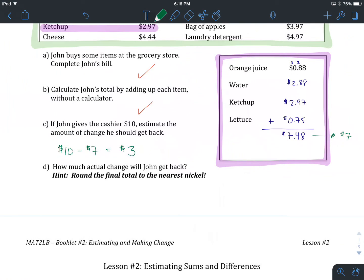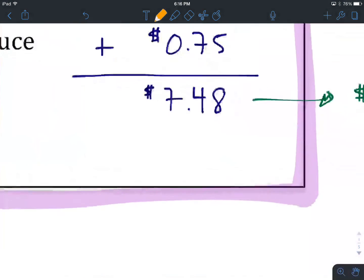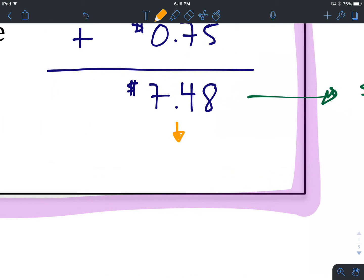The last step we're going to do in this lesson is find out how much actual change John will get back. And there's a hint. If we recall at the very end of the last booklet, if we're dealing with bills that are being paid in cash, we have to remember to round the actual total to the nearest nickel. So, let's start with that. $7.48. Let's round this to the nearest nickel. As you remember, that 8 is closer to rounding up to the nearest zero than rounding down to the closest five. So, we are going to end up with $7.50 is what we are actually going to have.